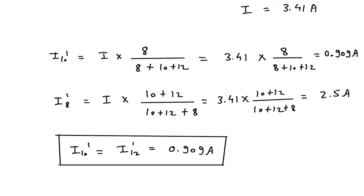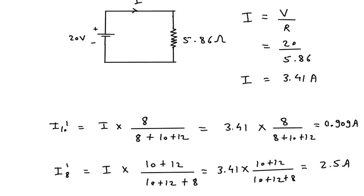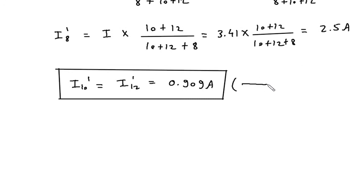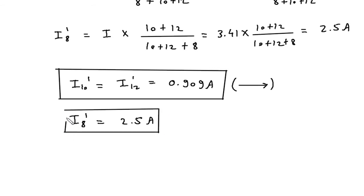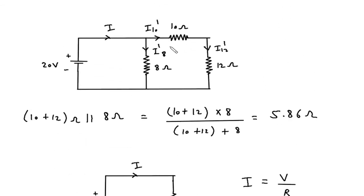The direction for I10 prime is rightward. I8 prime is 2.5 ampere, and its direction is downward. These directions are determined by the polarity of the source, since current flows from the positive terminal to the negative terminal of the battery.